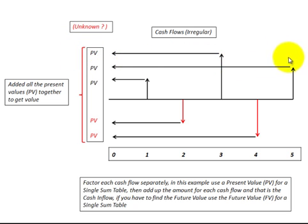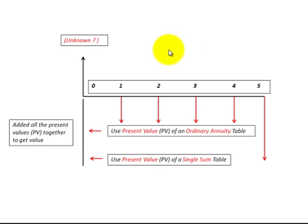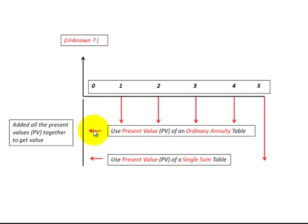You can do the same thing in the reverse direction if you have an unknown future value. Here we have an unknown present value with a known ordinary annuity of separate payments, so we use the ordinary annuity table — or the annuity due table if applicable — and discount it back to present value. Then we have a known future value that we discount back separately, and lump those values together to get the known amount.